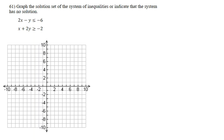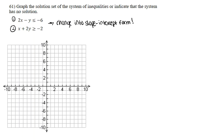We are looking at question 61, which asks us to graph the solution set of a system of inequalities or indicate the system has no solution. The first thing I want to do is label the inequalities so I know which one I'm working with, then put them into slope-intercept form, which is y = mx + b, where b is the y-intercept and m is the slope.